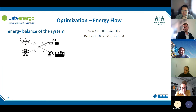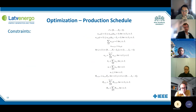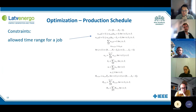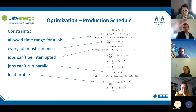For the energy flow optimization, we can use the energy balance of the system shown before and the energy balance of the battery model as constraints. The last part of the optimization is the production scheduling. The constraints allow a time range for every job, so every job has a start date and a finish date. Every job must run once and jobs can't be interrupted once started. Also, jobs can't run in parallel, and at the end we calculate the resulting load profile from the digital twin estimations for every job.